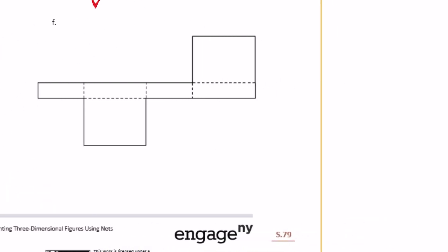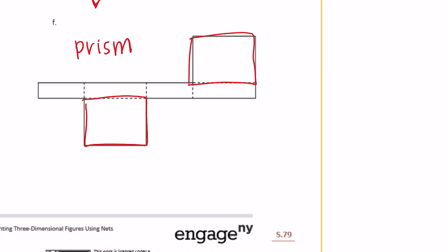And then F, the last one — our two bases are right here. Since there are two of them, it's a prism. The base is a rectangle, so it's going to be a rectangular prism.